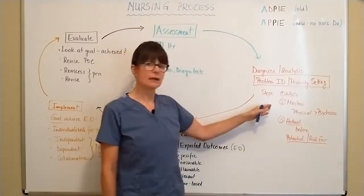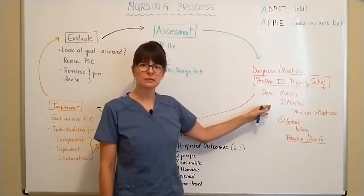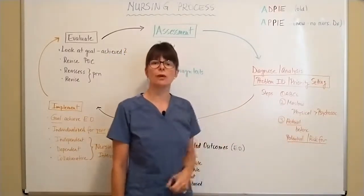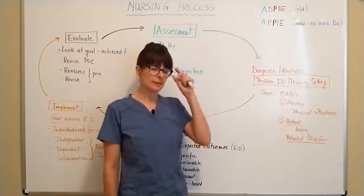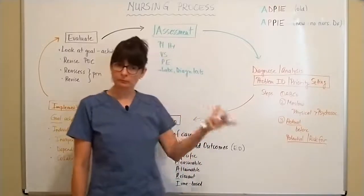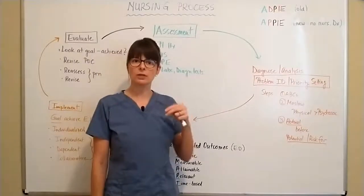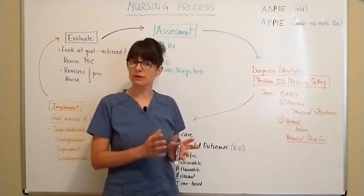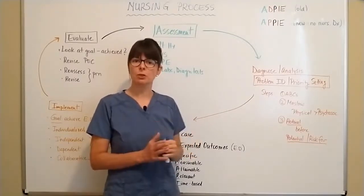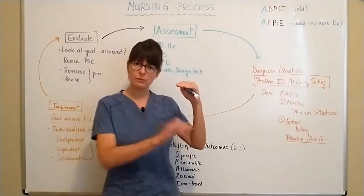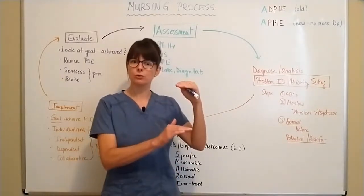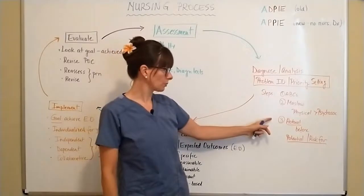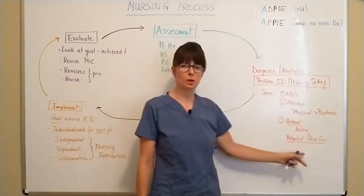You should also follow Maslow's hierarchy of needs because physical needs are going to take greater priority over psychosocial needs. For example, oxygenation — being able to breathe — is a higher priority than dealing with pain. Pain is very important and we have to address it, but in terms of priority, breathing always comes first. Pain, which is a psychosocial need, would come second. And we always have to address actual problems before potential or risk-for problems.